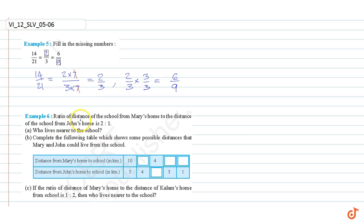Example 6. The ratio of distance of the school from Mary's home to the distance of the school from John's home is 2 is to 1. Who lives nearer to the school? Since 1 is less than 2, John lives nearer to the school. So the answer is John.